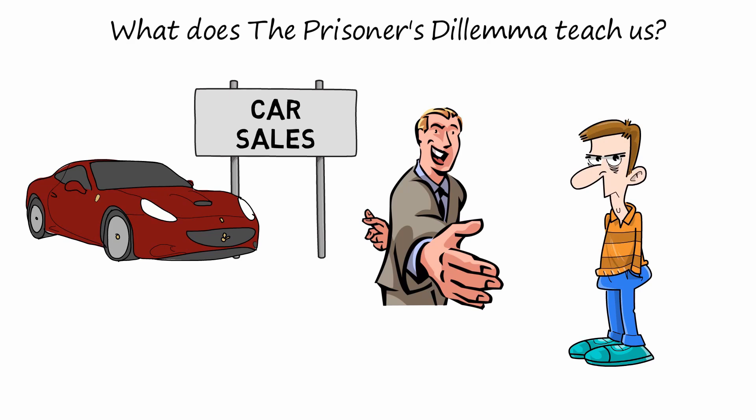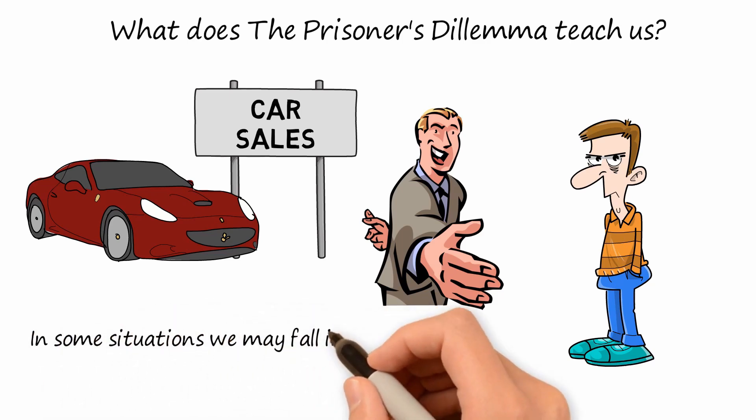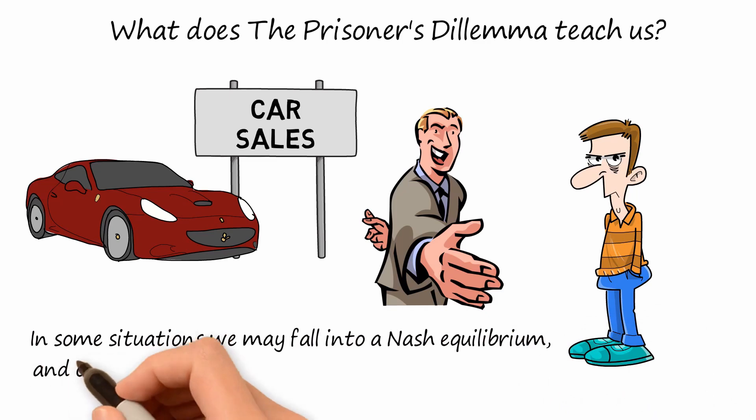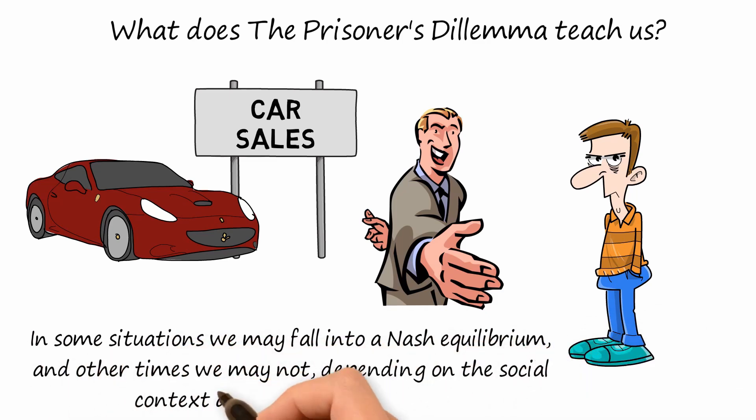The biggest problem with Game Theory is that, like most other economic models, it is based on the assumption that people are rational actors who are selfish and maximize utility. The reality, though, is that this is not always true. Sometimes we are selfish, but we are also social beings who cooperate and care about the welfare of others, often at our own expense. Game Theory cannot explain the fact that in some situations we may fall into a Nash equilibrium, and in other times we may not, depending on the social context and who the players are.